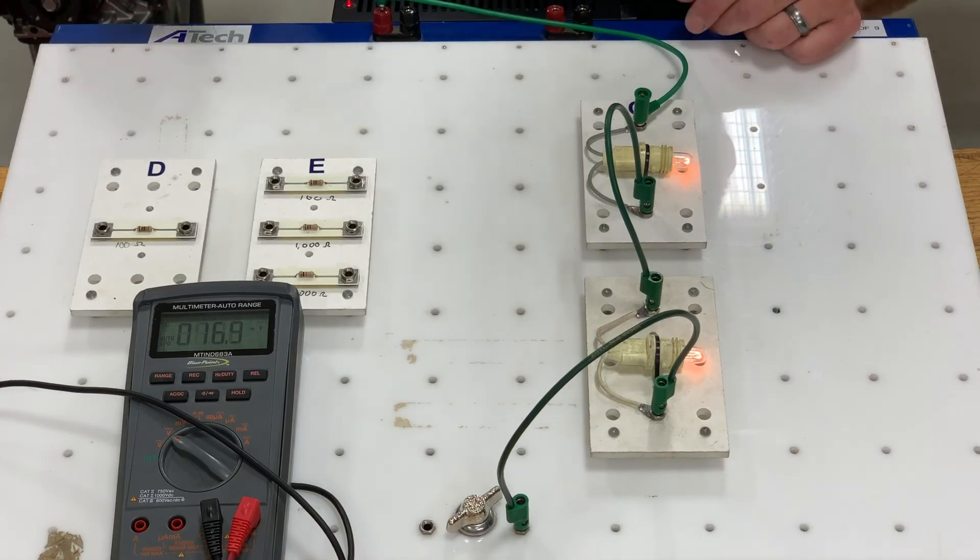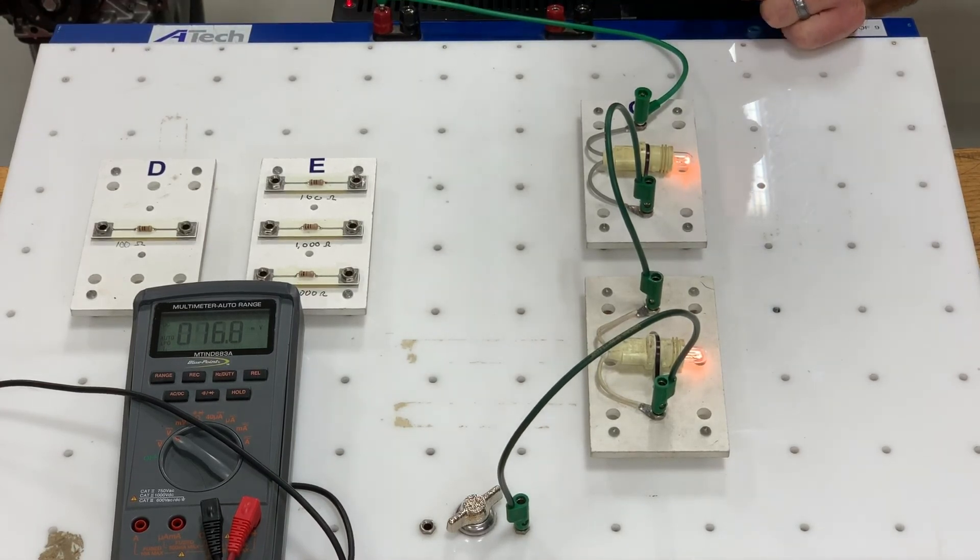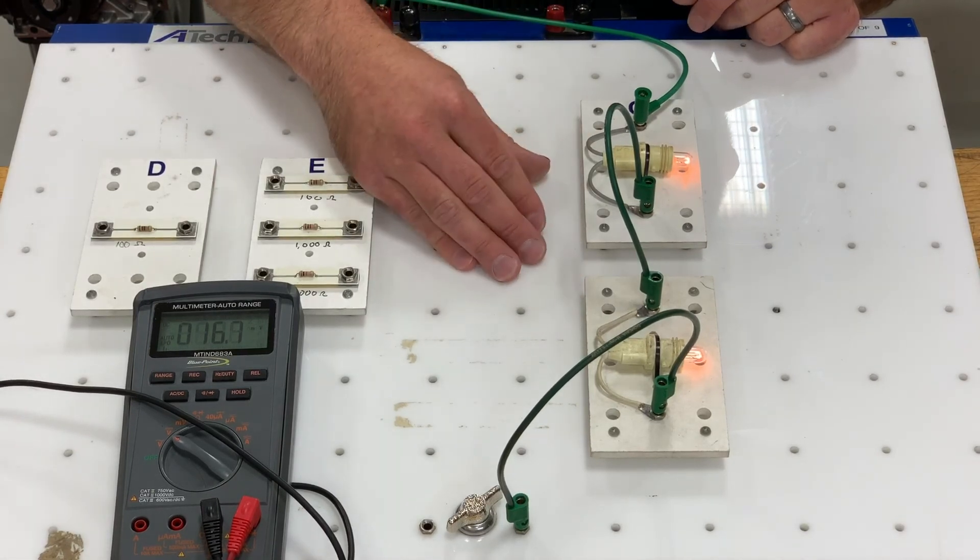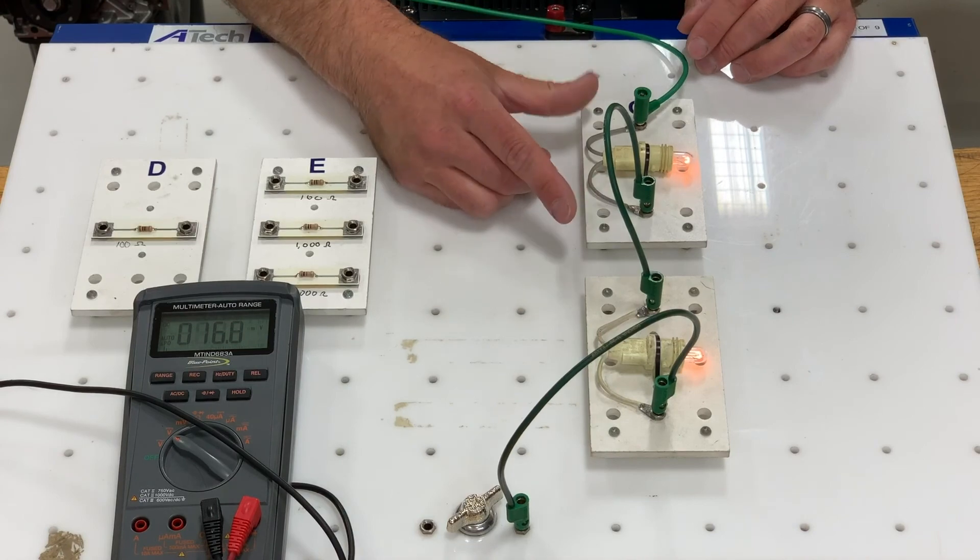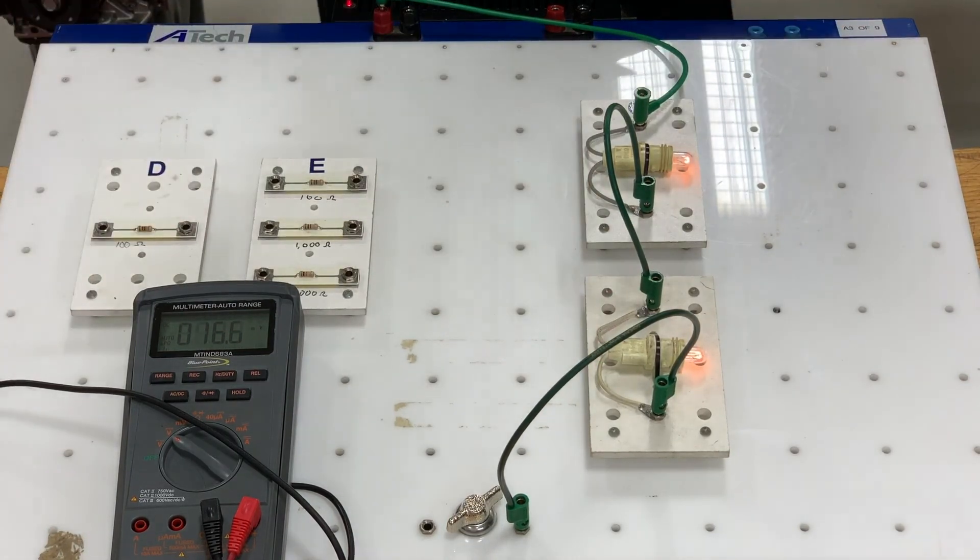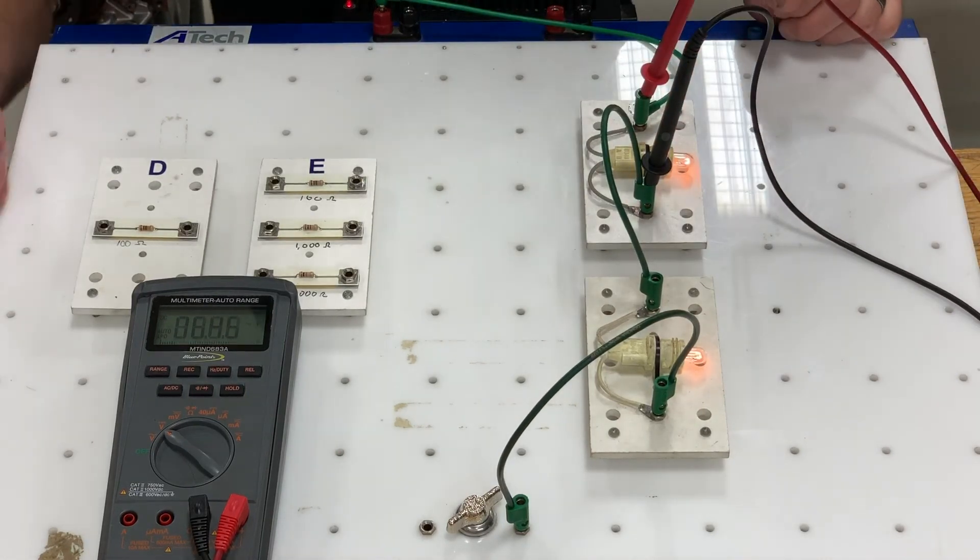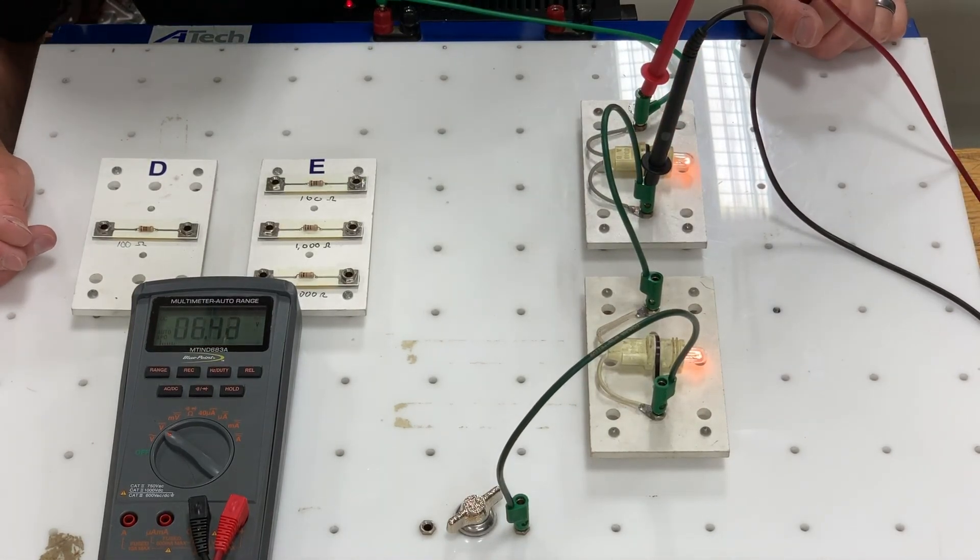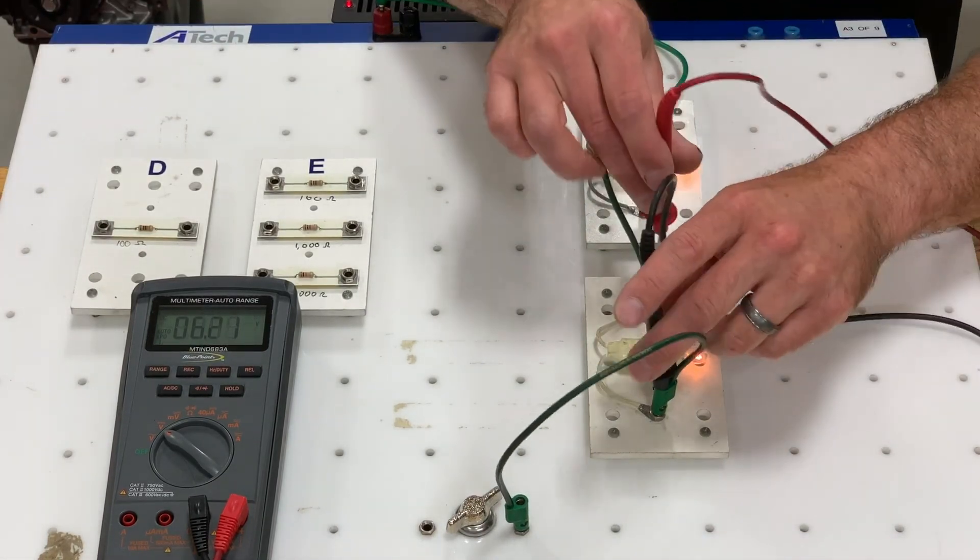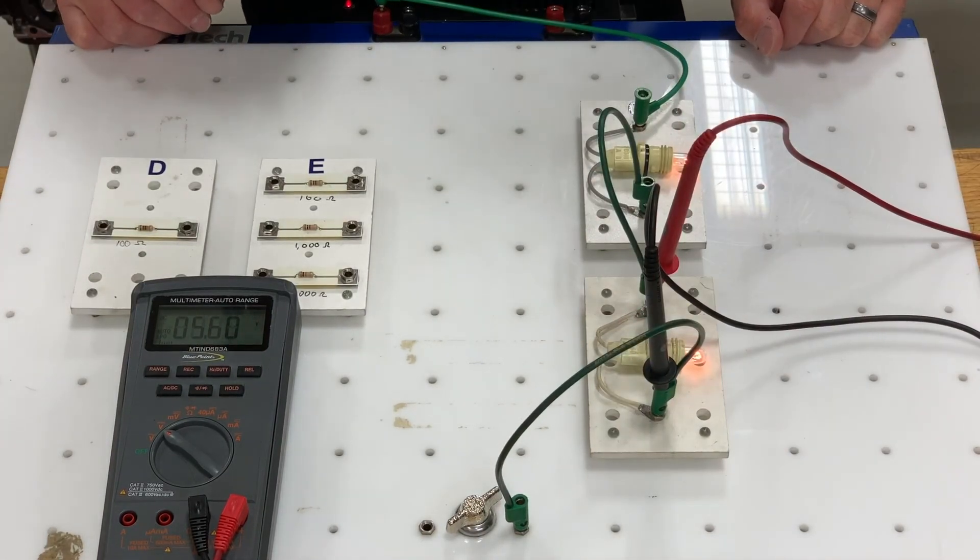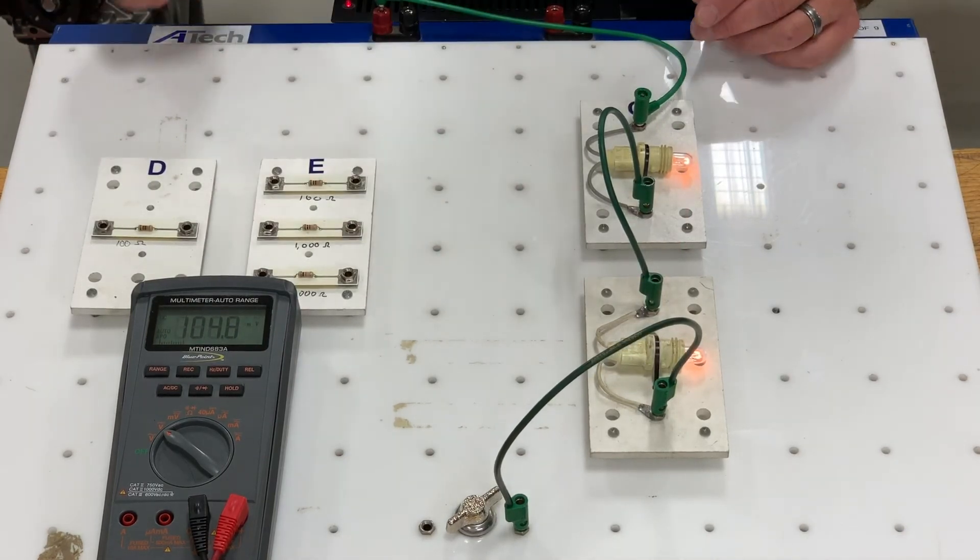Because I'm in a series circuit with 12 volts of available voltage at the top, these bulbs both have to share that 12 volts. So rather than one light bulb utilizing 12 volts, now each of them are probably using about six. If I take my meter, I can confirm that. I've got about 6.4 volts going through that bulb. This one's running about 5.6. With some understanding about voltage, let's talk about how current works in this system.